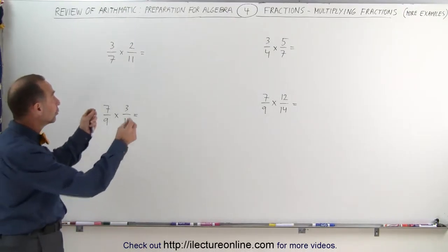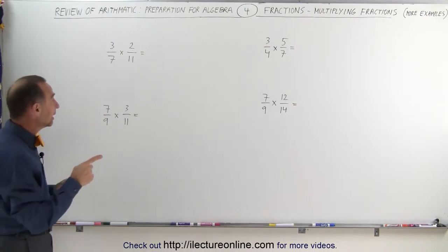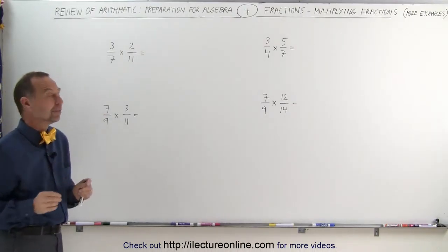Again, when we multiply fractions, we multiply the numerators together, and we multiply the denominators together. But if we can reduce the fractions before we start, that's even better.